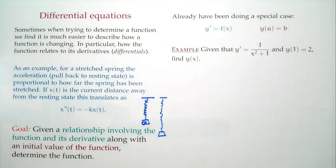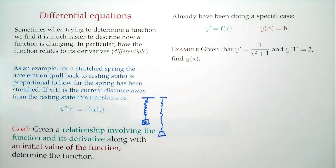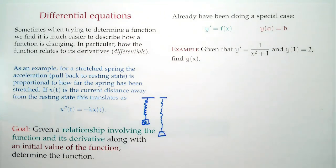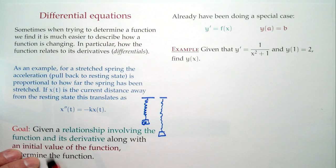The acceleration depends on how far you've pulled it away from equilibrium. The minus sign indicates that if you pull in one direction, the acceleration tries to pull you back the other way — towards the center. You can solve this once you have more tools, which you get in a differential equations course. This particular one isn't very hard but it's a little outside the scope of what we want right now.